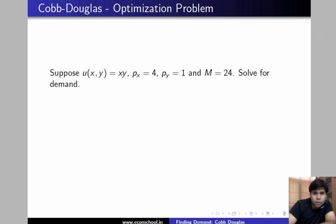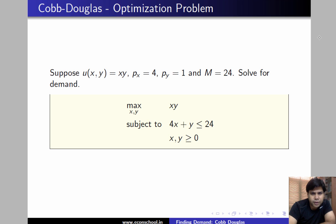Hi, in this video we'll learn how to solve a utility maximization problem of a consumer whose preferences are Cobb-Douglas. Here is the problem: we want to maximize utility which is xy subject to the budget constraint 4x plus y is less than or equal to 24.